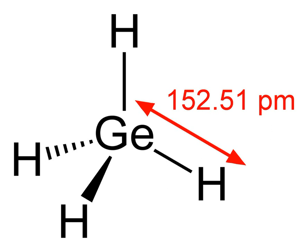Germaine is a group 14 hydride. Germaine has been detected in the atmosphere of Jupiter.